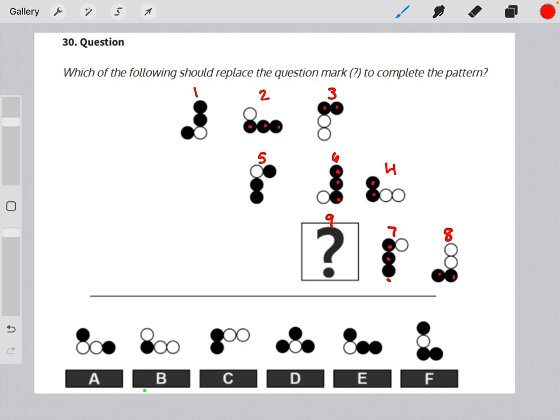So our missing element should match this diagonal, our 159, where it's 1, skip 1, shade 2, which would eliminate us down to answer choice E and F.